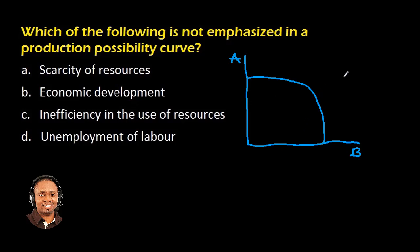Secondly, the quantities of the resources are fixed, they don't change. For goods A and goods B, the quantities don't change.